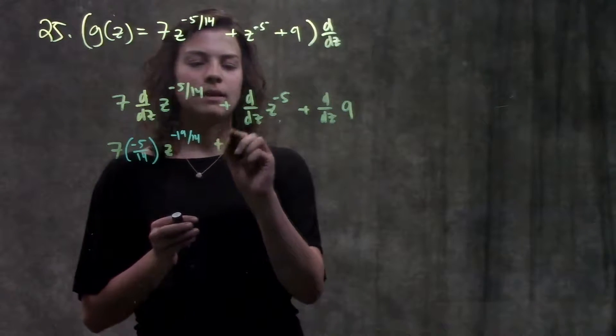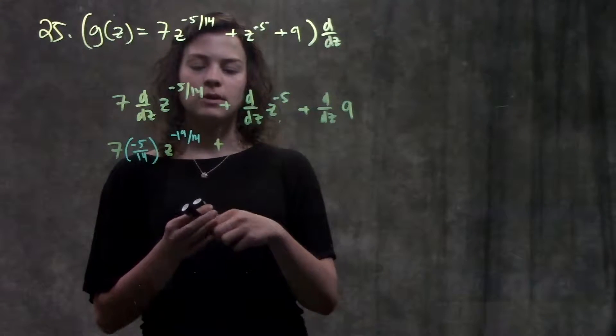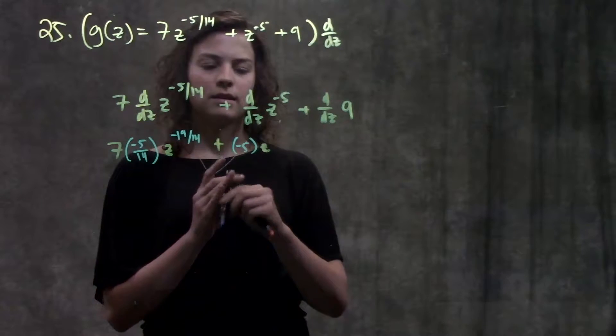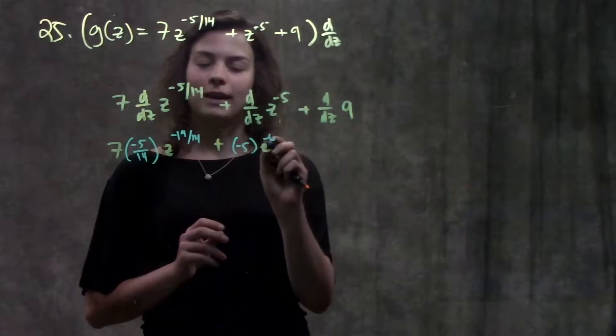Now I go ahead and do the same thing with my second part. I bring the exponent to the front. So I have minus 5 in the front times z to the minus 6. That's minus 5 minus 1 gives me 6.